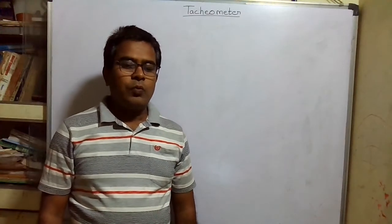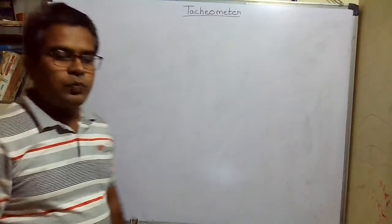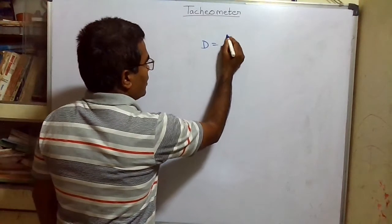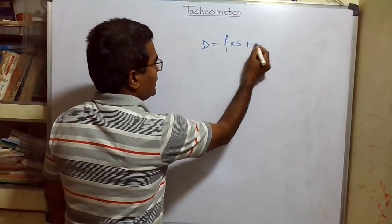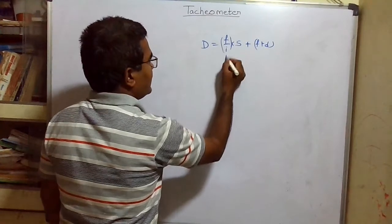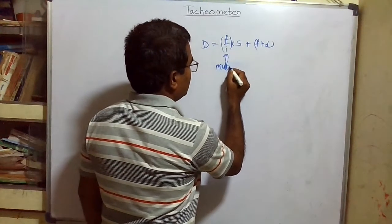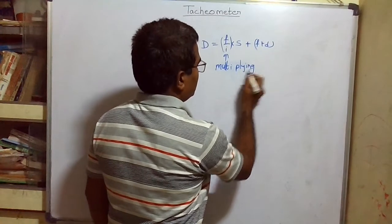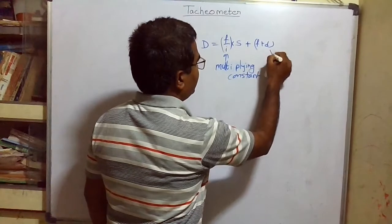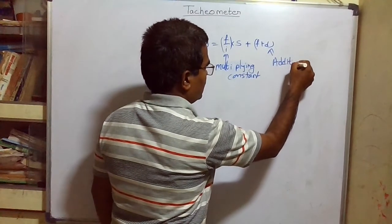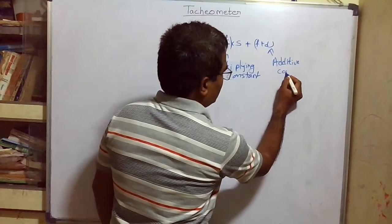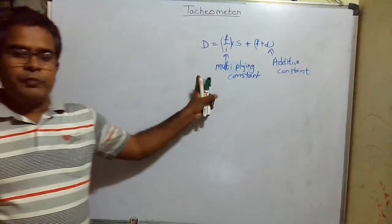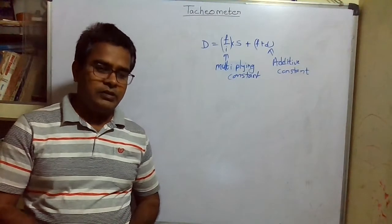In the last lecture of tachometry, we have seen the formula to calculate horizontal distance between two points when the line of sight is horizontal. We can find out the distance d between any two points by using the formula: d = (f/i) × s + (f + d), where f/i is the multiplying constant and f + d is the additive constant. This is the formula to calculate horizontal distance when the line of sight is horizontal.